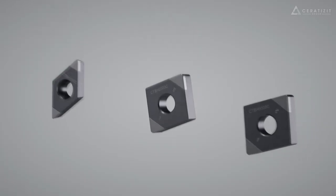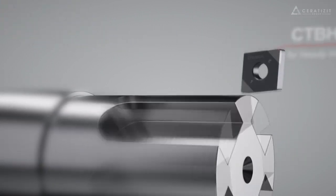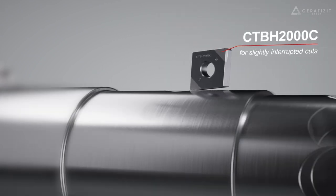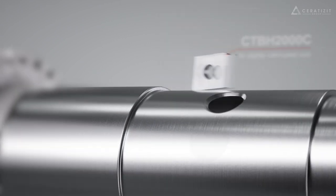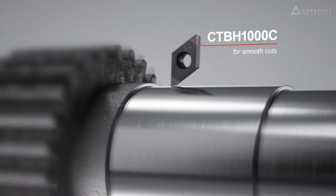In our standard program, we offer various geometries. For heavily interrupted cut, CTBH 3000C. For a slightly interrupted cut, CTBH 2000C. And for a smooth cut, is our CTBH 1000C.